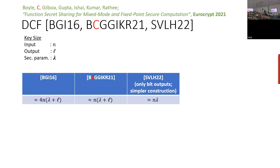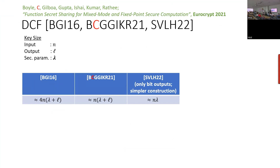To summarize: earlier constructions had key size around 4n times lambda plus L. An improvement in EuroCrypt brought it to n times lambda plus L, where n is input bit length, lambda is the security parameter, and L is output bit length. A very recent paper achieved n times lambda for one-bit outputs. Some work also showed you can achieve the same cost with larger ring elements.